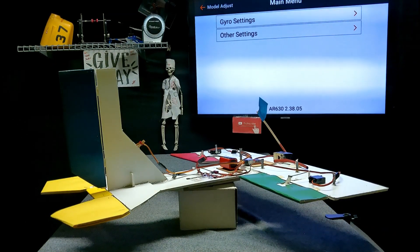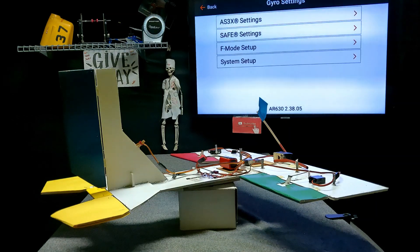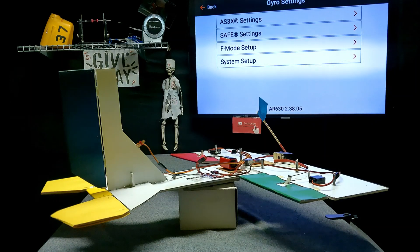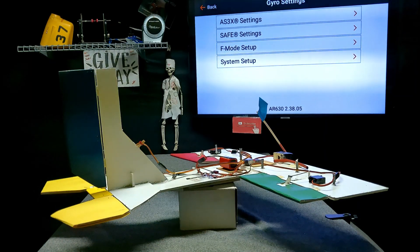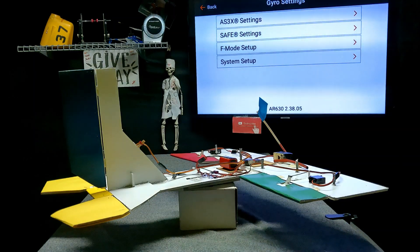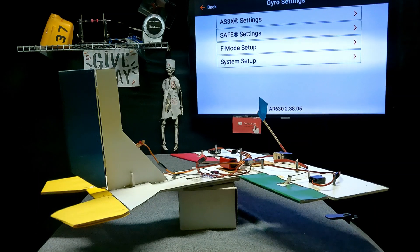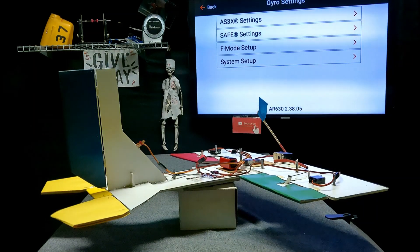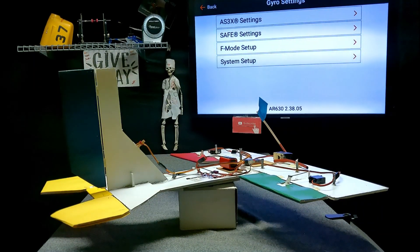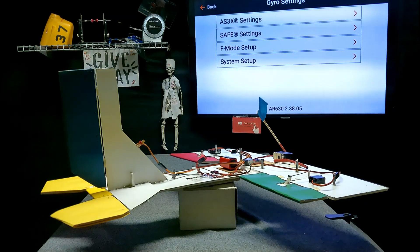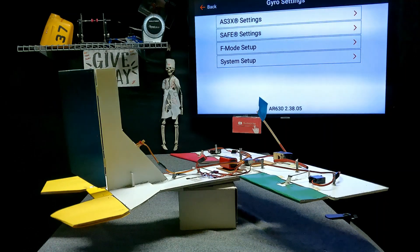The gyro is the brain inside the receiver that does AS3X and Safe Select. AS3X is only for wind. You get a gust of wind that blows the plane to the left, the gyro will kick in and move whatever control surface it needs to put the plane back where it was. It's your cruise control. As you go up a hill, your cruise control gives your car a little more throttle to keep up with the anticipation of the hill slowing the car down.